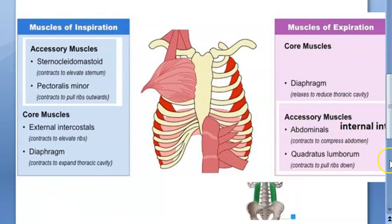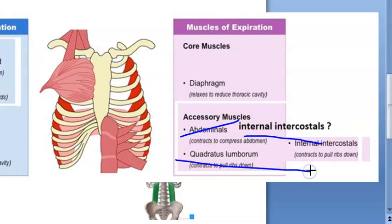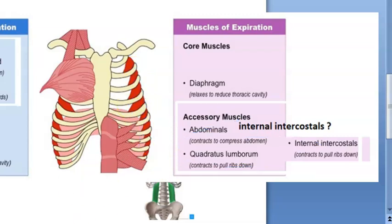Can you name all the accessory muscles of expiration? Abdominal muscles — rectus abdominis, external oblique, internal oblique, and transverse abdominis — internal intercostal muscles, and quadratus lumborum. The whole intention is to pull the ribs down.